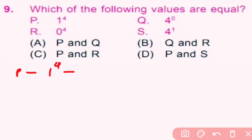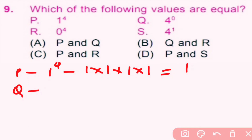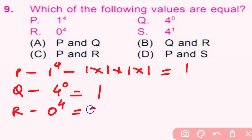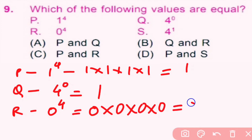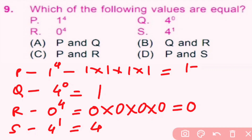Question number 9: which of the following values are equal? Option P: 1 raised to 4 equals 1. Option Q: 4 raised to 0 equals 1. Option R: 0 raised to 4 equals 0. Option S: 4 raised to 1 equals 4. P and Q both give 1, so they are equal. Option A is correct.